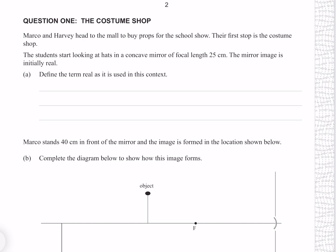The students start looking at hats in a concave mirror of focal length 25cm. The mirror image is initially real. Define the term real as it is used in this context. If we have a mirror, a real image happens when the rays converge in real space, forming an image at a location that we could reach out and touch. As opposed to a virtual image where the rays diverge, meaning that nowhere in real space do they intersect.